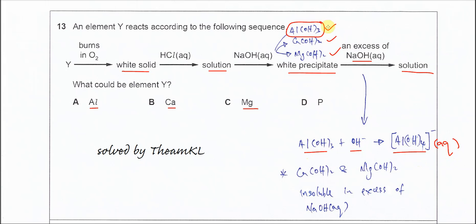For calcium hydroxide and magnesium hydroxide, they will not really dissolve or be soluble in excess of sodium hydroxide because when the hydroxide is small it's going to form more precipitate, means it won't dissolve. So the answer is confirmed as A, aluminum. Thank you.